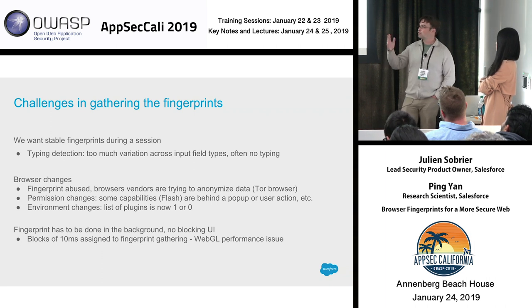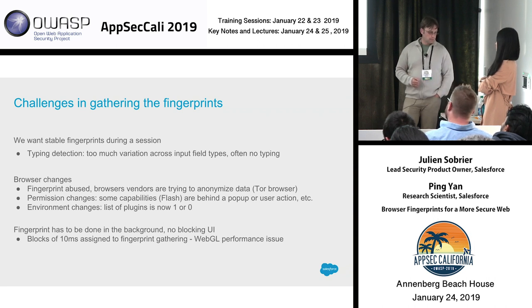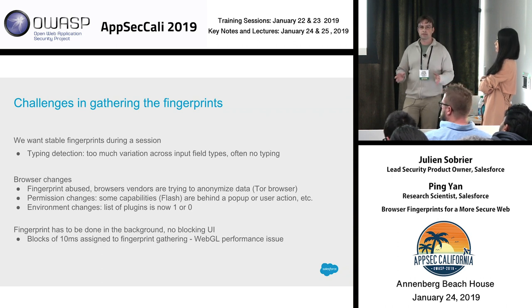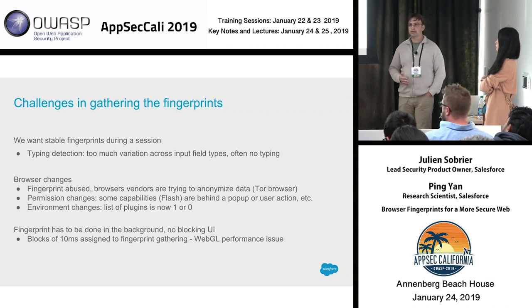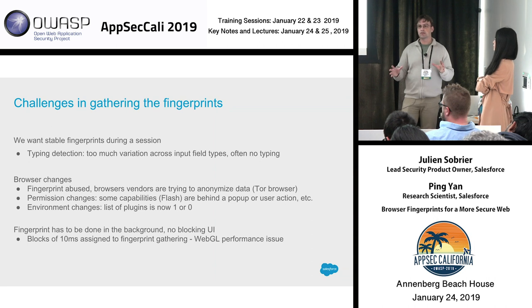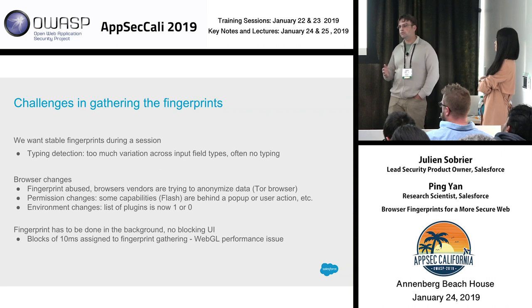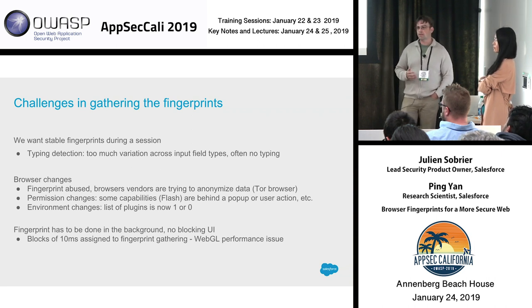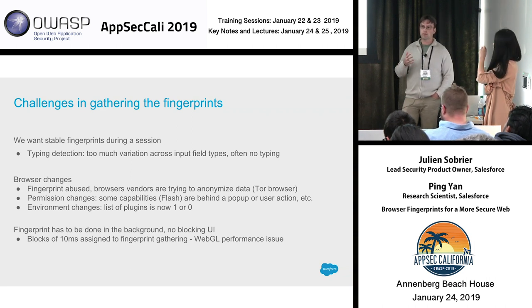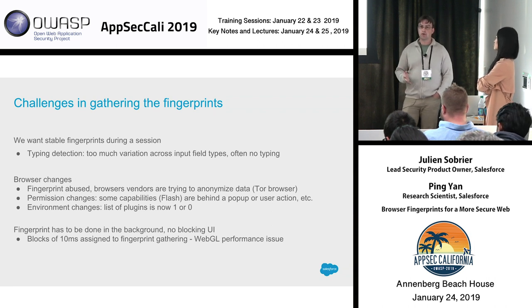The Tor browser has done a lot more work to anonymize data. Permission changes have also shifted things: three to four years ago you could do almost anything in browsers without a permission prompt, but now Flash went from requiring user permission to being disabled by default. That's why we are no longer able to easily get the Flash version from JavaScript, because it's most often either disabled completely or triggers a permission dialog.